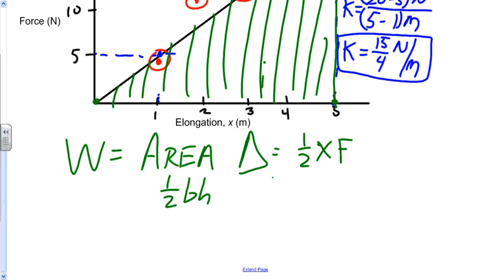So area equals one half. Elongation is x. So it goes from 0 to 5, so my elongation is 5. And my force goes from 0 and it stops at 20, so my force is 20 newtons.